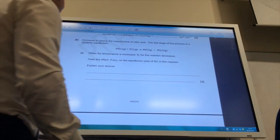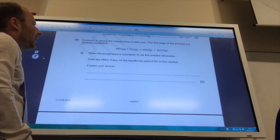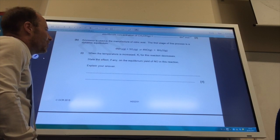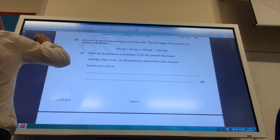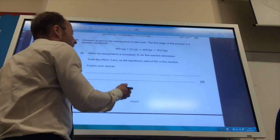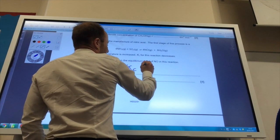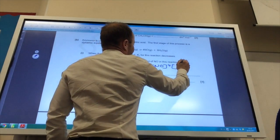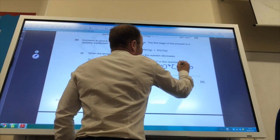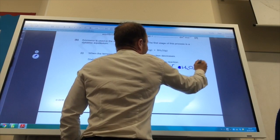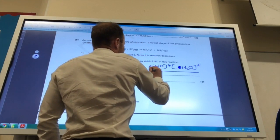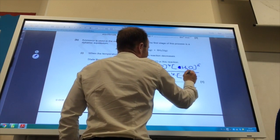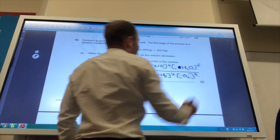Right, so we're now on to a new equilibrium. They've given it to me there. It says when the temperature is increased, Kc decreases. State the effect, if any, on the equilibrium yield of NO. So remember Kc is equal to the concentration of the products divided by the concentration of the reactants. So that is my Kc expression for this reaction.